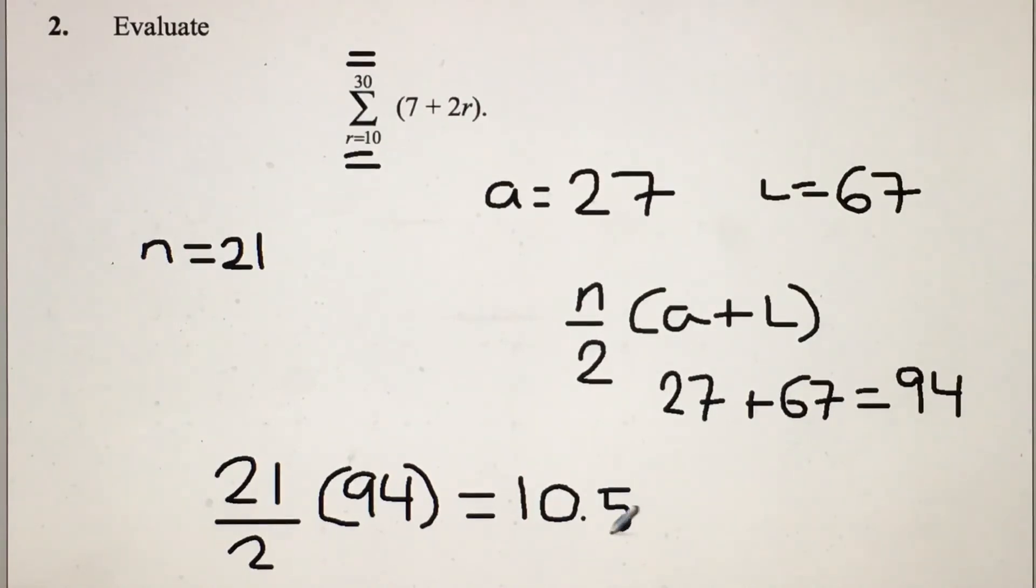10.5 multiplied by 94, which is equal to 987. So that's your answer.